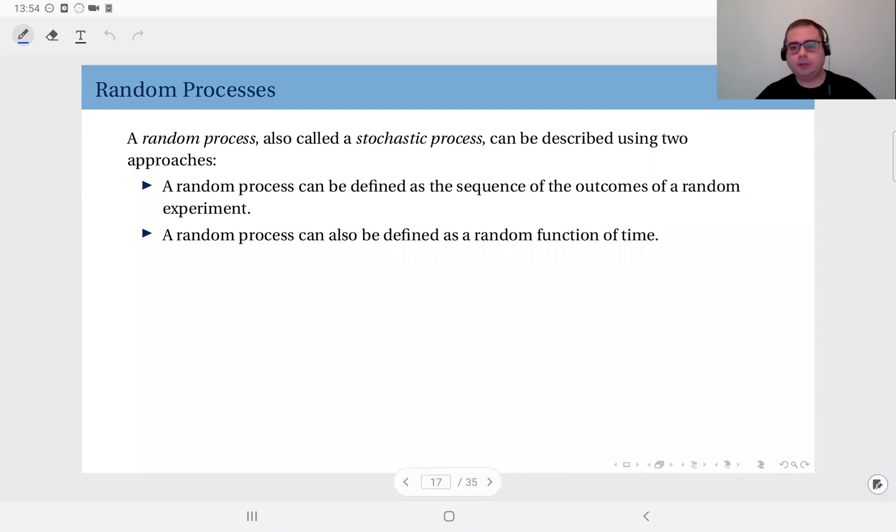Well, in the name of the course, you see probability theory and stochastic processes. So a random process or a stochastic process, which means the exact same thing, can be described using two approaches. What's a random process or what's a stochastic process?